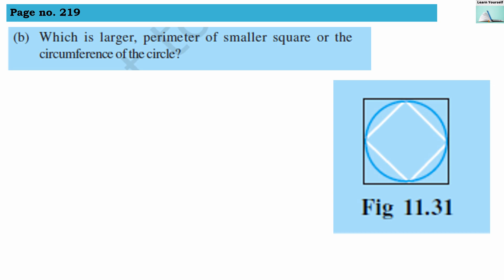Second question. Which is larger, perimeter of smaller square or the circumference of the circle? In perimeter we are adding all the sides or multiplying 4 with the side. Whereas in circumference of the circle, the circumference formula is 2 pi r where we are multiplying this with 2 and 3.14 or 22 by 7. So circumference will be obviously bigger than the perimeter.